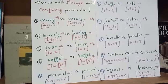Group seven: later versus letter. Group eight: breath, the noun, versus breathe, the verb. Group nine is consummate, the verb, versus consummate, which means complete as an adjective. And the last group: hyenas, the animal, versus the adjective heinous.